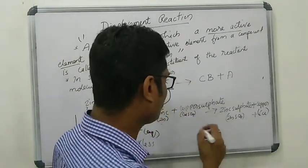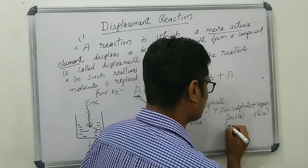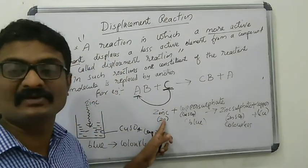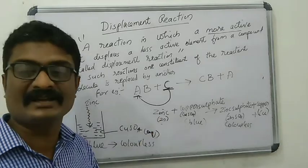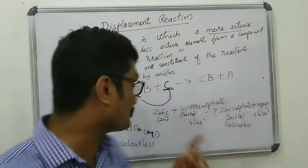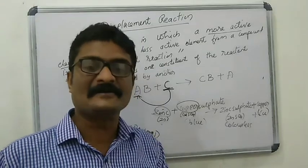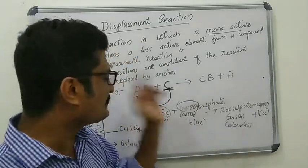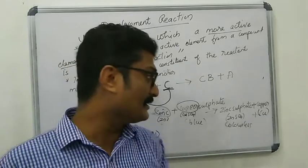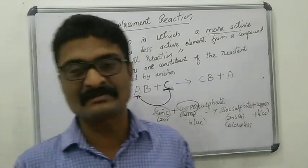The color of the copper sulfate solution is blue and zinc sulfate is colorless. Here, the more reactive zinc displaces the less reactive copper from the copper sulfate solution. Zinc is more reactive than copper, and zinc displaces copper from copper sulfate solution. A new compound, zinc sulfate, is formed, and zinc sulfate is colorless.